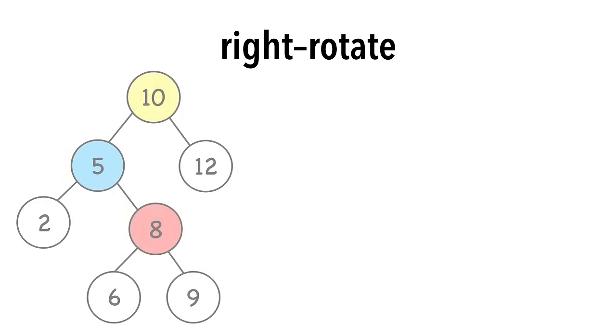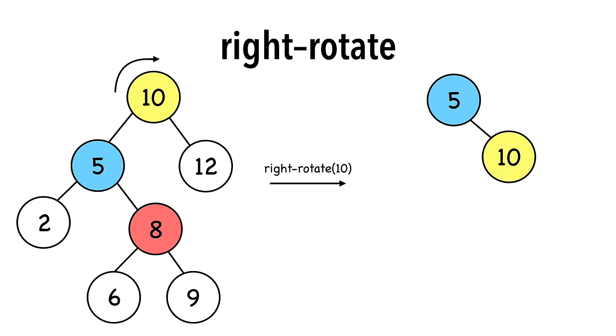Now let's walk through a right rotation. We're going to rotate on the yellow node, 10. This time, 10's left child, 5, becomes 10's parent. 5's right child, 8, becomes 10's new left child.